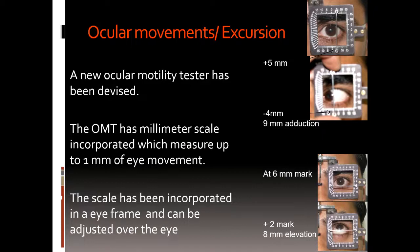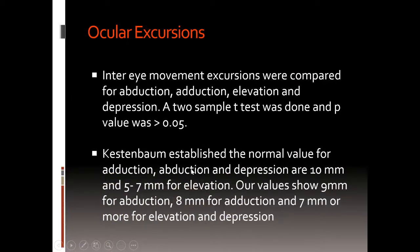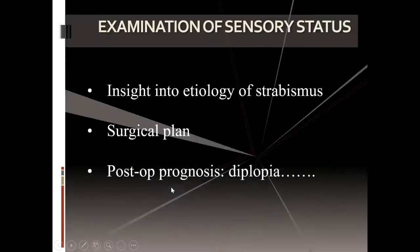Ocular motility is measured as plus one, plus two, plus three, plus four, and minus one, minus two, minus three, minus four — with minus four being not able to move beyond midline and minus one being not able to reach the limbus at the temporal part. There is a scale to measure the amount of excursions; the normative data was published by Kestenbaum in 1955 covering elevation, depression, abduction, and adduction. We can take some questions on ocular motility or continue with the examination of sensory status.